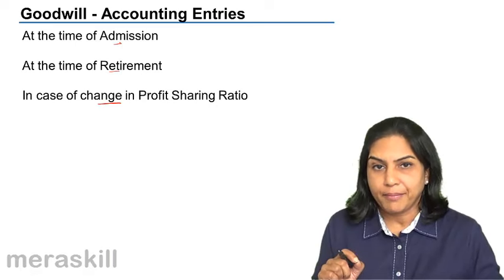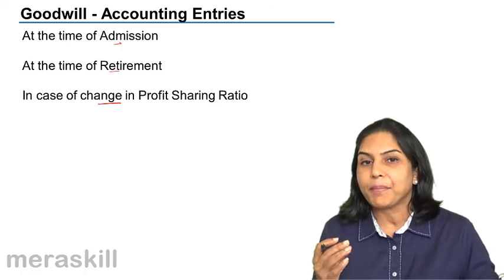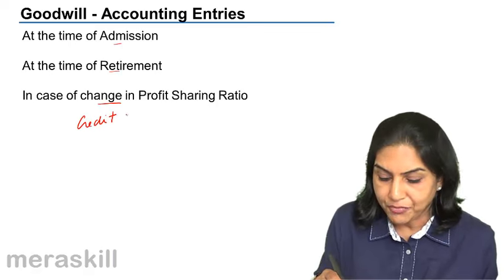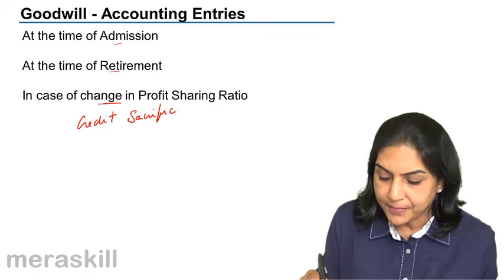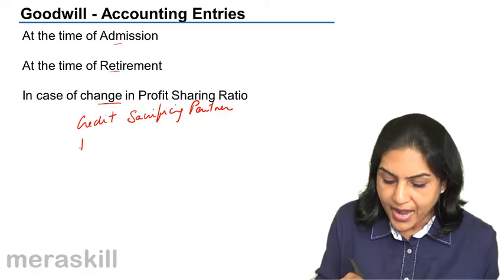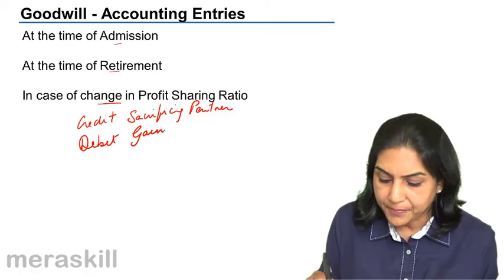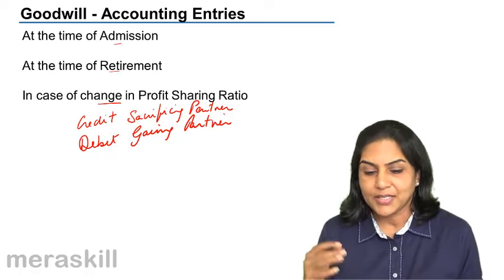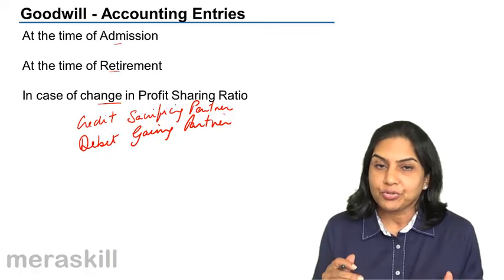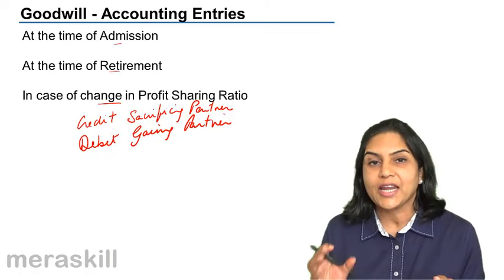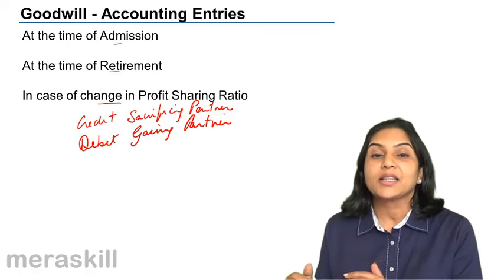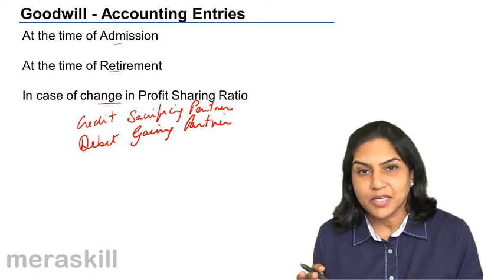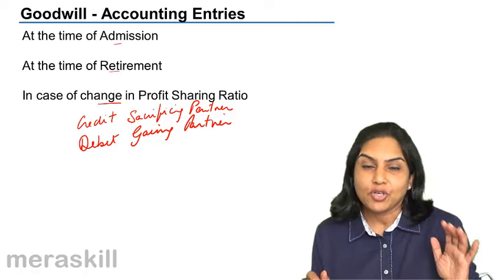The normal method of doing this is to credit the partner who is going to lose out in future — we credit the sacrificing partner. If you keep this in mind, it becomes easier. We credit the sacrificing partner and we debit the gaining partner. The gaining partner's capital account is going to be debited because he will compensate the sacrificing partner who has lost a share in the future profits. The sacrificing partner's account will be credited.